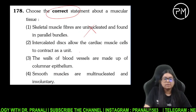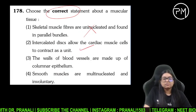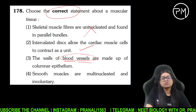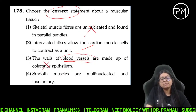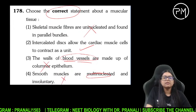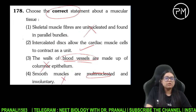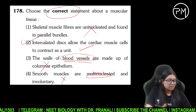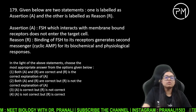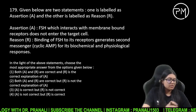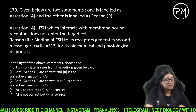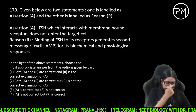Correct about muscular tissues: skeletal muscle fiber are multi-nucleated. Intercalated disc allow the cardiac muscle to contract as a unit — bol sakte hain. Walls of blood vessels — squamous ki bani hain, columnar ki nahi. Smooth muscle multi-nucleated nahi hai, uninucleated hai. 178 ka answer 2 ho jayega.